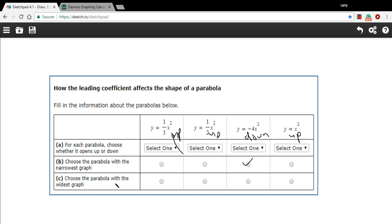And this says, choose the parabola with the widest graph. And here we want the fraction that's smallest between zero and one or negative one and zero. And that's going to be this one third. One third is smaller than one half. So that is going to be our widest graph. So that's a little bit of work with how the leading coefficient affects the graph of a parabola.